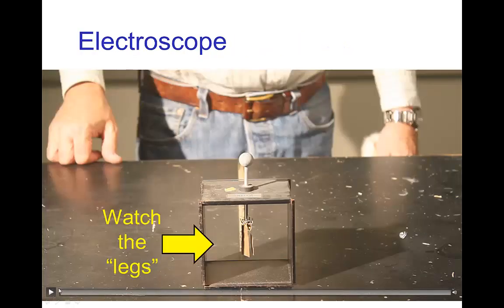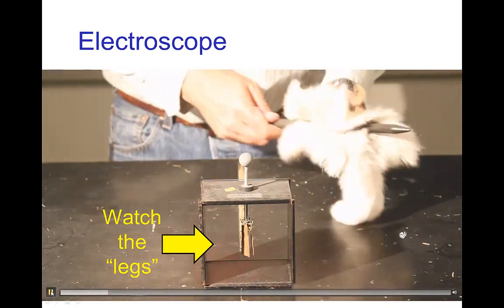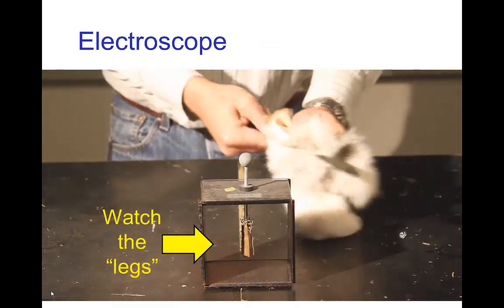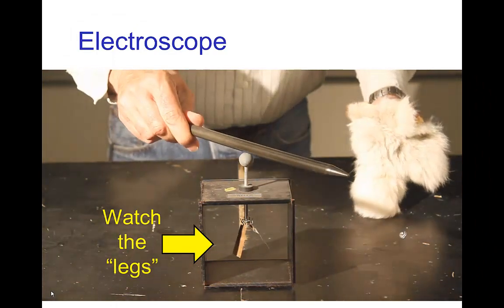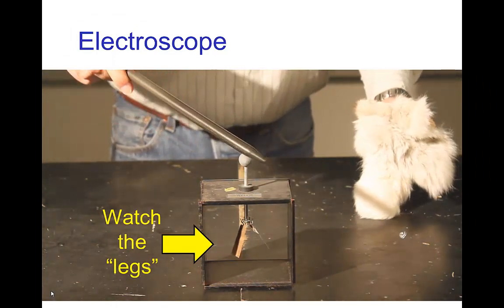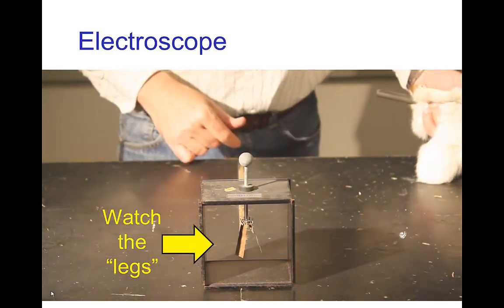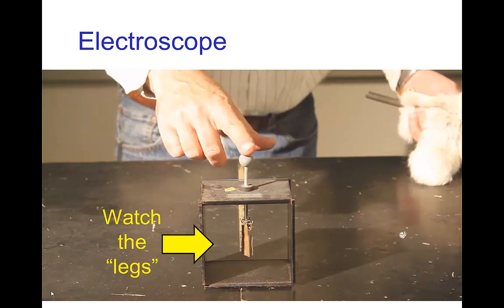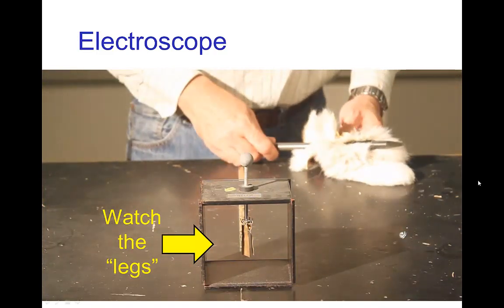Now, let's look at a little demonstration. So I have a rubber rod, I rub it with some fur, and then I'm going to detect the charge by dumping the charge that I just put on the rod on that electroscope. Now, I touch it and I have now discharged it.